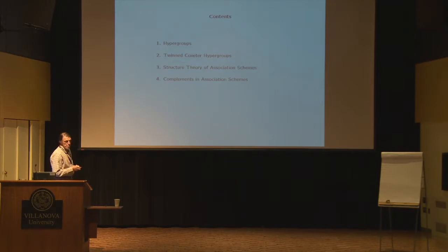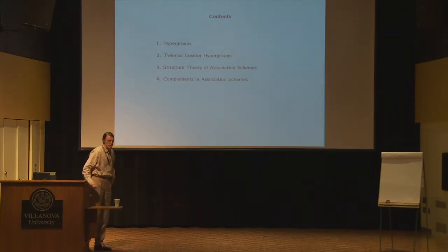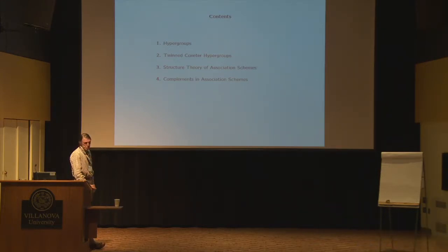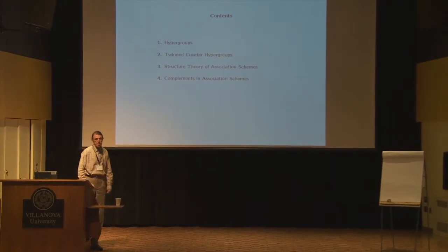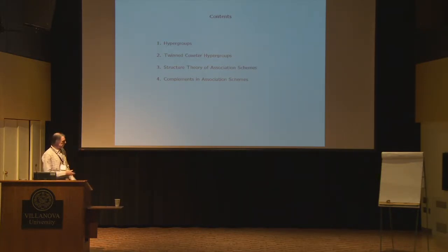Here's my table of contents. I would like to briefly introduce hypergroups — it's a very simple definition. I'll talk about twinned Coxeter hypergroups, a technical term for something more general than twin buildings but from a different point of view. The motivation for introducing hypergroups comes from this second section. After that, I'm interested in complements in association schemes: when does a closed subset have a complement in the spirit of the Schur-Zassenhaus theorem. I'll review some general structure theory of association schemes; most of section three is old business.